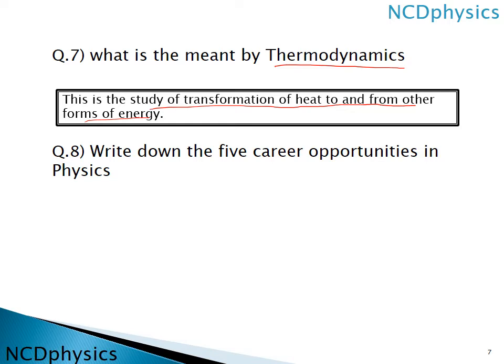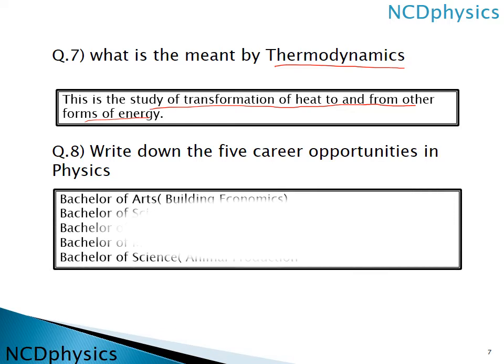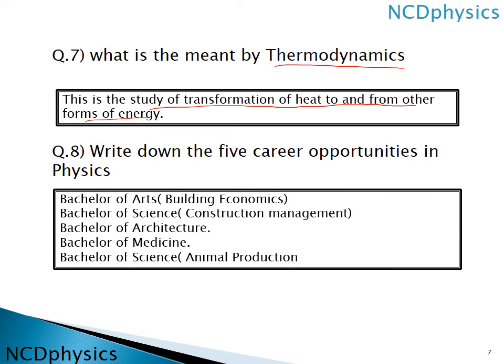Question number eight: write down five career opportunities in physics. There are many options — some of them are: Bachelor of Arts and Economics, Bachelor of Science in Construction Management, Bachelor of Architecture, Bachelor of Medicine, and Bachelor of Science in Animal Production. There are many others as well.